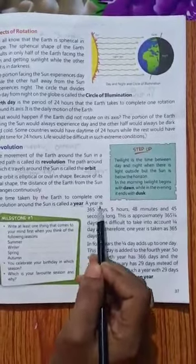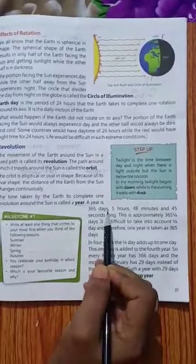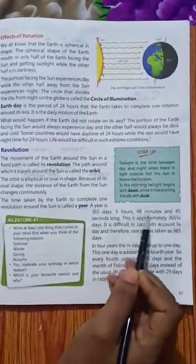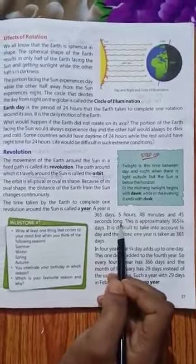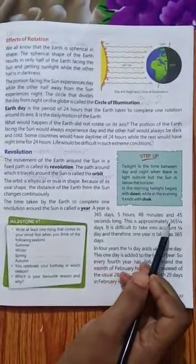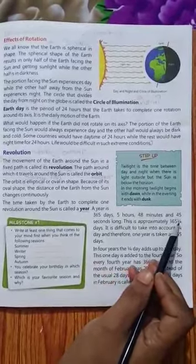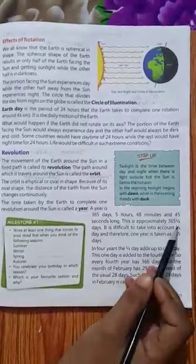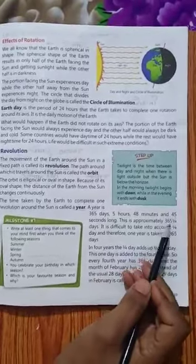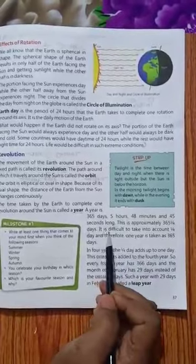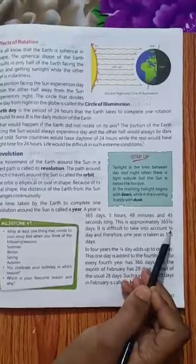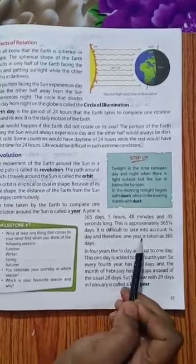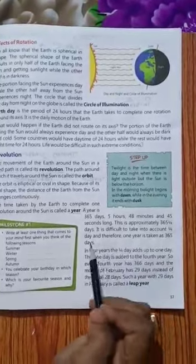Ek saal mein kitne din hota hai? 365 days, 5 hours, 48 minutes and 45 seconds. This is approximately 365 and one fourth day. Isko hamesha one and fourth day mein count karti hai, lekin it is difficult to take into account one upon four day. And therefore, one year is taken as 365 days.